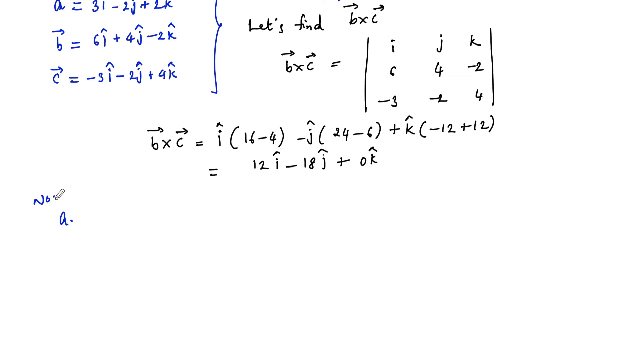Now a dot b cross c equals 3i minus 2j plus 2k dot product with b cross c, which is 12i minus 18j plus 0k.